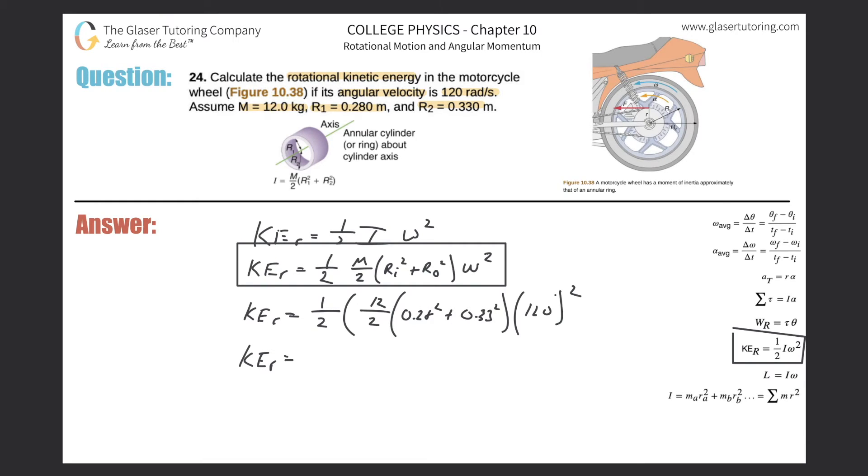And what do we get? Let's do inside the parentheses first. 0.28 squared plus 0.33 squared. And then take that, multiply it by 12 over two, take that and then multiply it by a half. And that multiplied by 120 squared. And we should get a value here. The answer is 8.09 or 8.1, depending upon how many sig figs you think this should have, times 10 to the third.